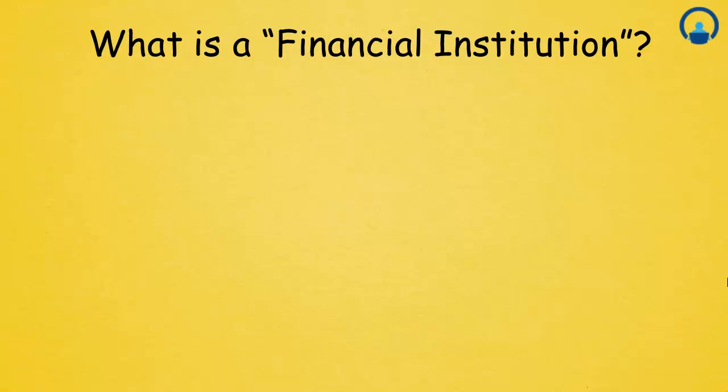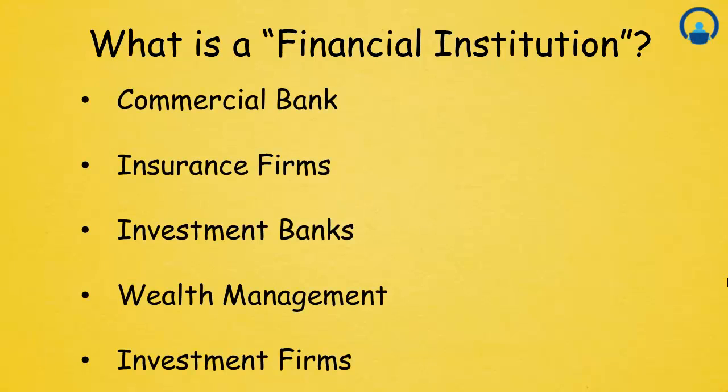Let us start with understanding what a financial institution is. You must have heard this term many times but it can be hard to define properly. The different categories under financial institutions are: commercial banks, which are the most common; insurance firms; investment banks; wealth management; and investment firms.